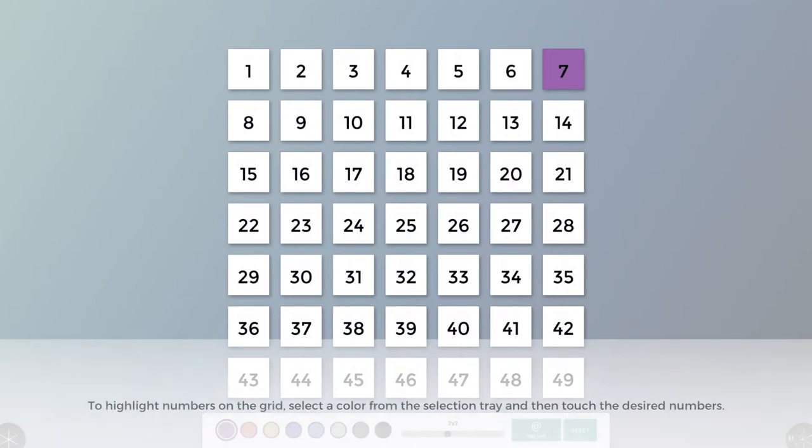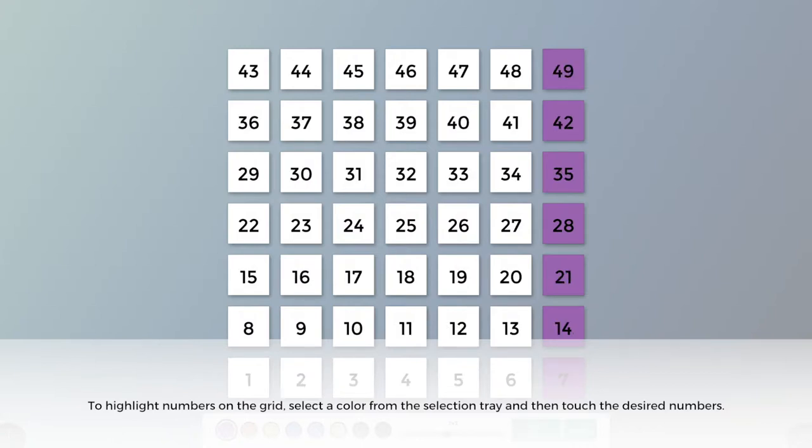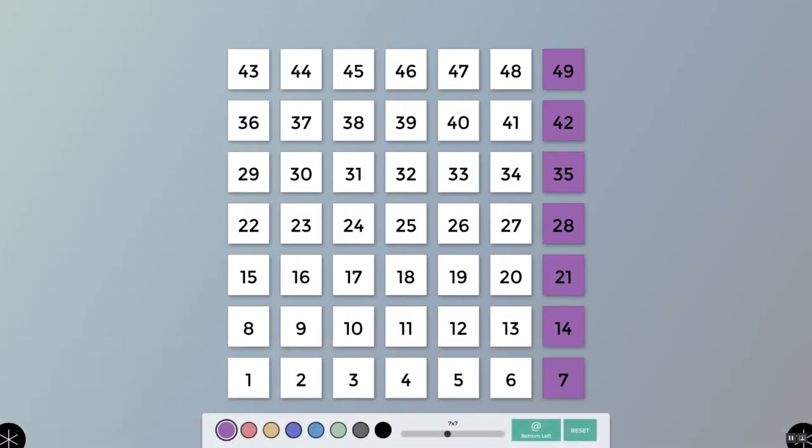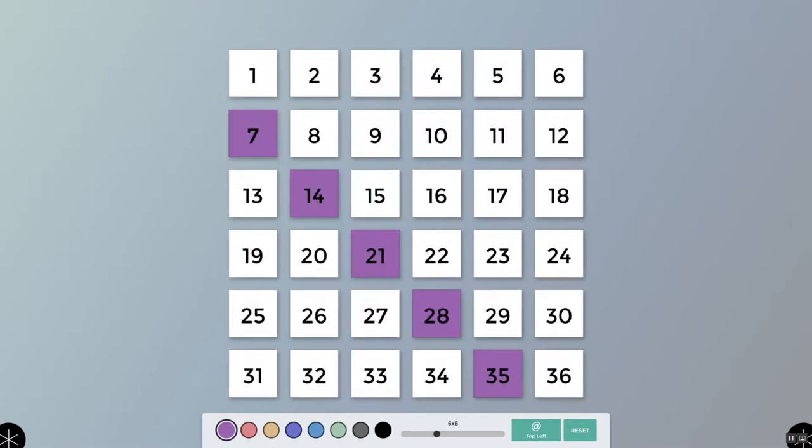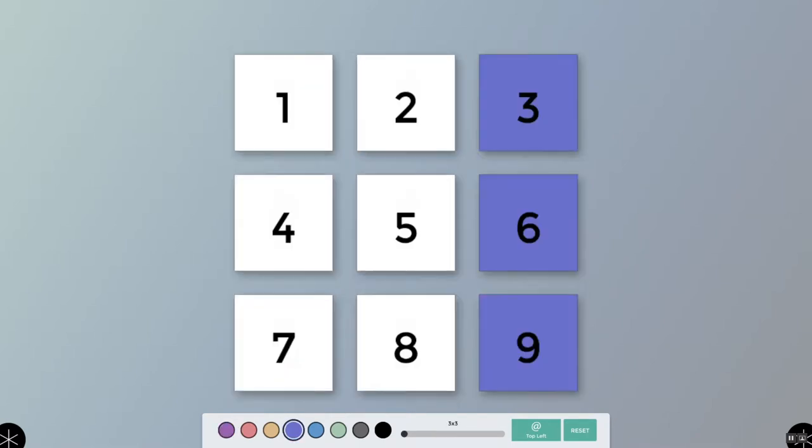The numbers in the grid can be colored by touching them after selecting a color located beneath the grid. Students can use the grid to highlight number patterns while working on math problems. Pressing Reset will clear the colors from the entire grid.